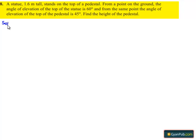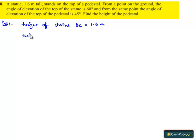Moving on to the solution. The height of the statue is given as 1.6 meters — let us denote it as BC, so BC = 1.6 meters. The height of the pedestal, let us assume it to be AB from the ground, since the statue is standing on top of the pedestal. Let AB = H meters.